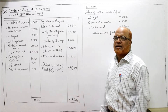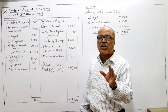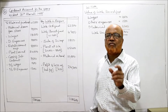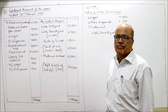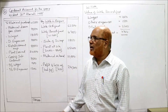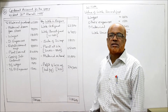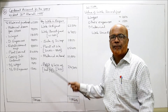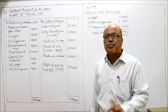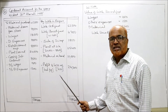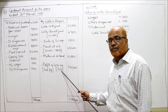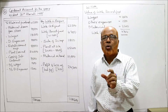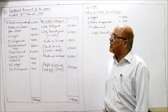Credit side: work certified 62,500 given in the problem. Work uncertified 4,700 calculated in working note. Sale of scrap 1,800. Plant at site: plant issued 34,000 minus depreciation 8,600 equals 25,400. Material on hand 10,000. In this problem the debit side total is more than the credit side total, so we are getting a loss — unlike most problems where the credit side is more, giving notional profit. The balancing figure is 24,200, appearing on the credit side as a loss, and the whole loss of 24,200 should be transferred to the P&L account.